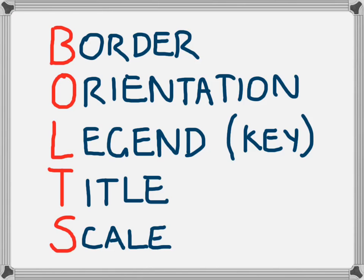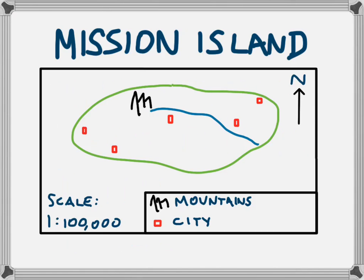The last element that each map should have is a scale. We can see on the map of Mission Island that we have a scale down here of 1 to 100,000.